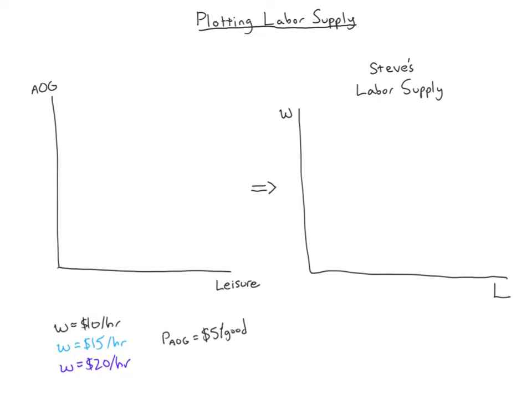We're going to read the diagram on the left for different wages — specifically ten, fifteen, and twenty dollars per hour — and use that information to plot a labor supply diagram on the right. Since this is an individual's choice, it's going to be Steve's individual labor supply. If you wanted a market labor supply curve, you'd need to add up all individual labor supply curves — Steve's, Bill's, Greg's, and so on.